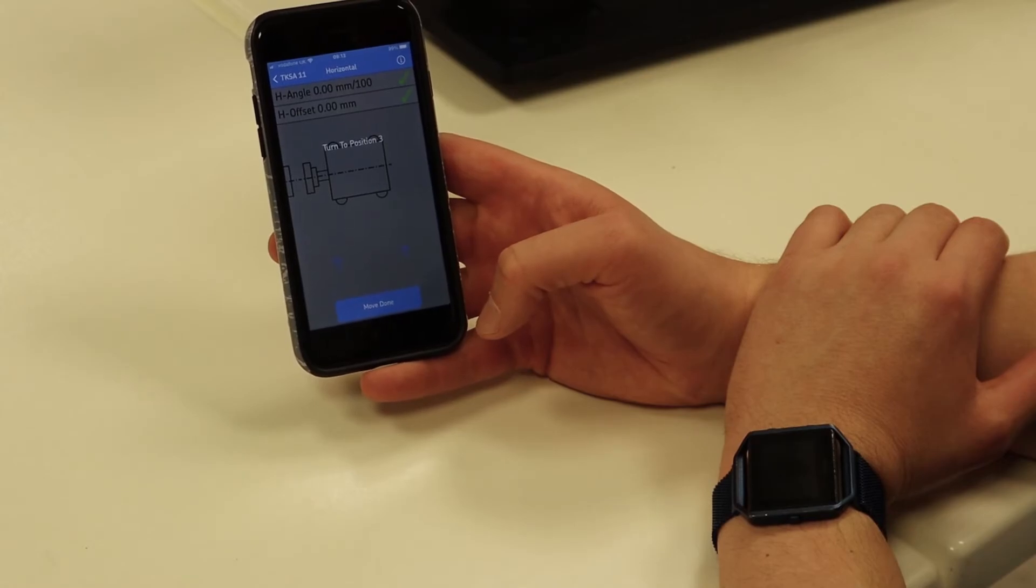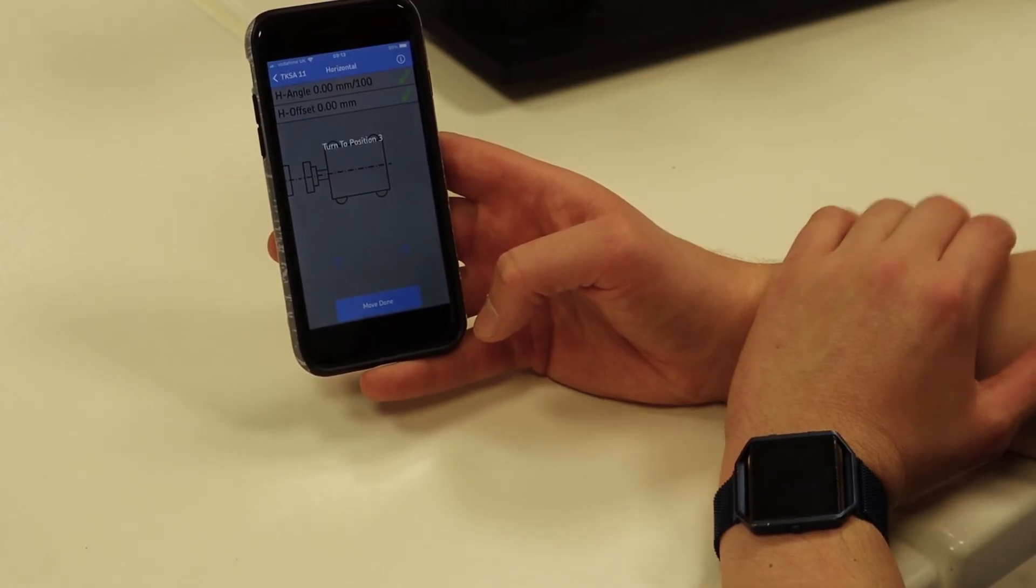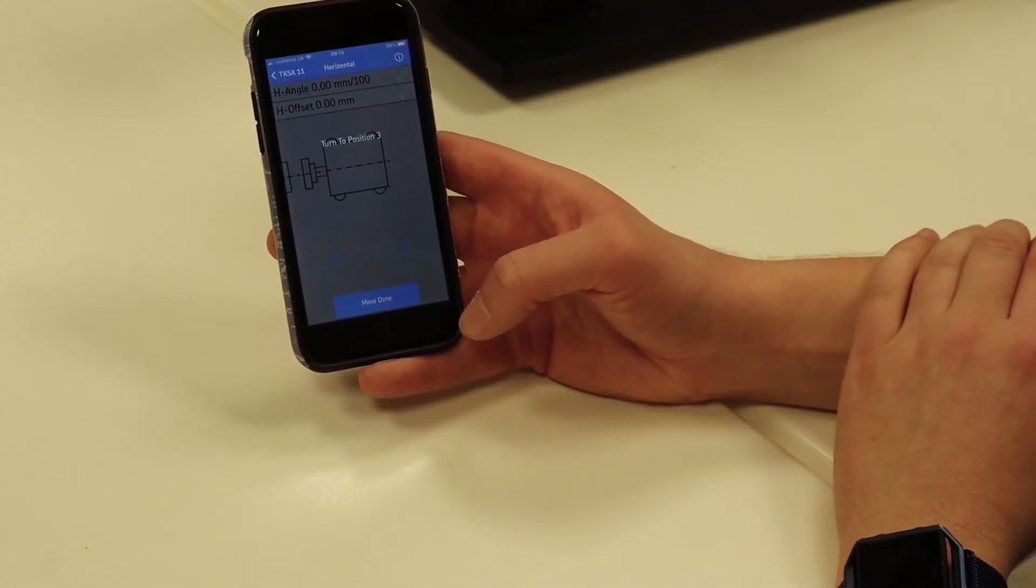If this was out of alignment, it would tell me that there'd be values there to move backwards and forwards.